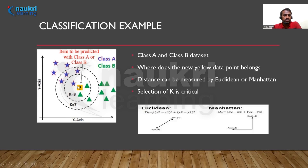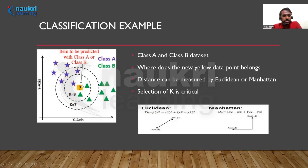Distance is calculated based on Euclidean and Manhattan metrics, among others — these two are the most popular. Euclidean distance between two points x1 and x2 is: square root of (x2 minus x1) squared plus (y2 minus y1) squared. Manhattan distance is the absolute value of (x2 minus x1) plus (y2 minus y1). Based on these two distance formulas, KNN calculates which neighbors are closest.